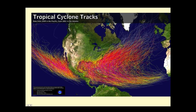Looking at tropical cyclone tracks in the Atlantic from 1851 to the present, and in the Eastern Pacific from 1949 to the present, you can see that density and also a progression of tracks going around the steering winds that the subtropical semi-permanent high provides.